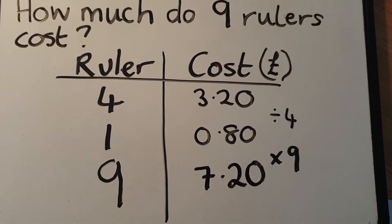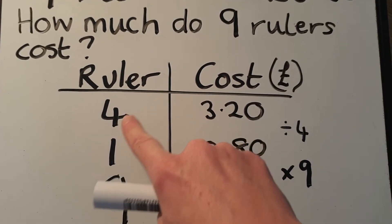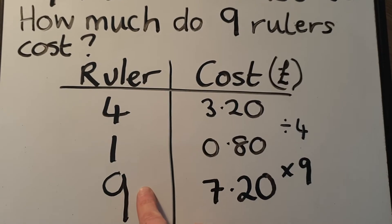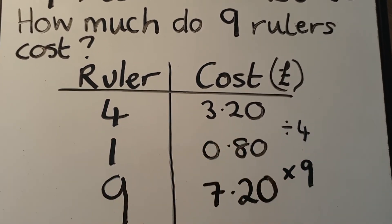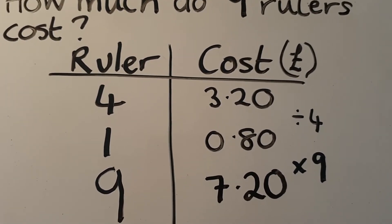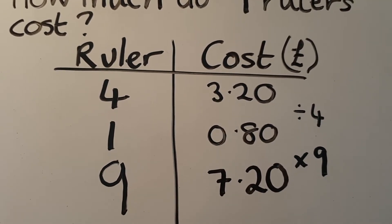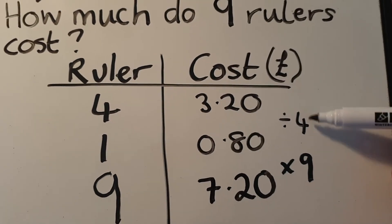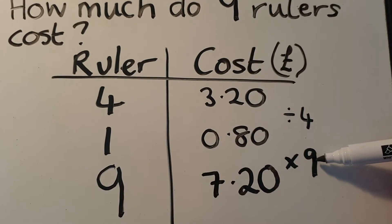The table helps if you write how many you initially knew the price of, then write the number one. Always find one first and then multiply it up by as many as you're trying to find. So four rulers cost three pounds twenty, one ruler cost eighty pence or zero pounds eighty, and nine rulers cost seven pounds twenty. All we did was divide by four and then multiply that answer by nine.